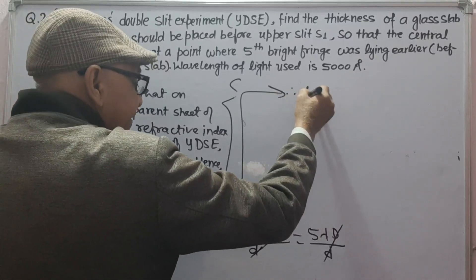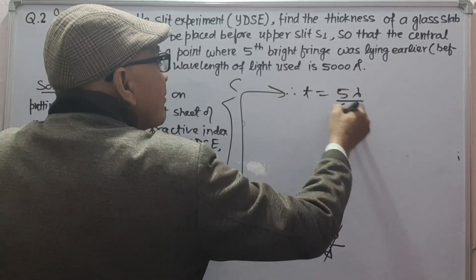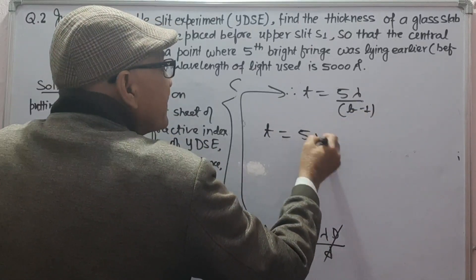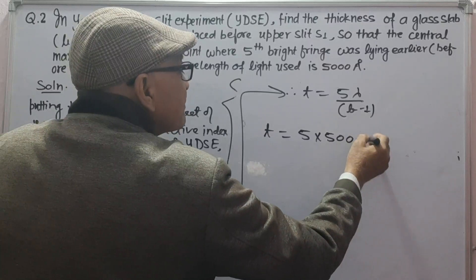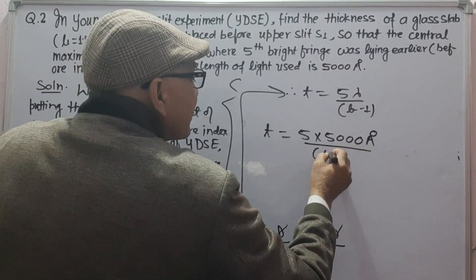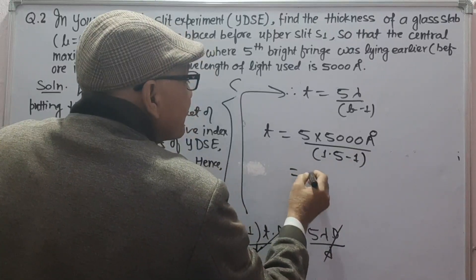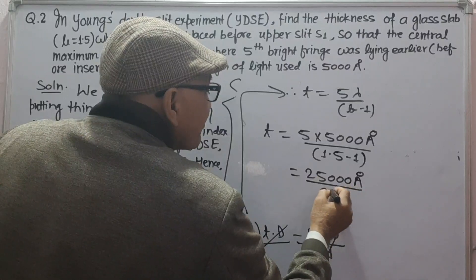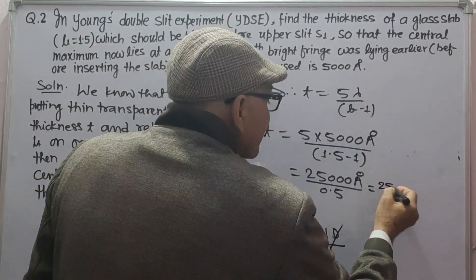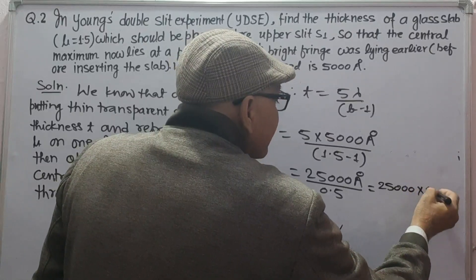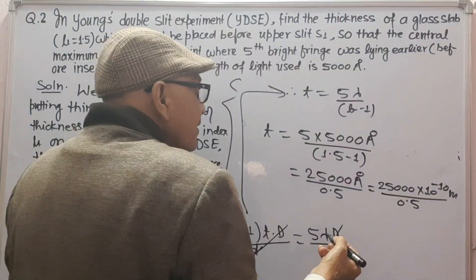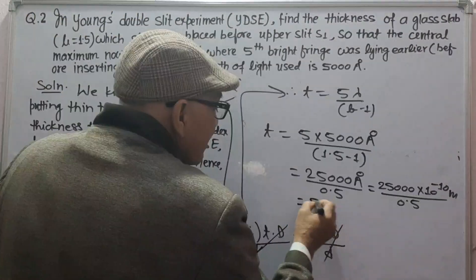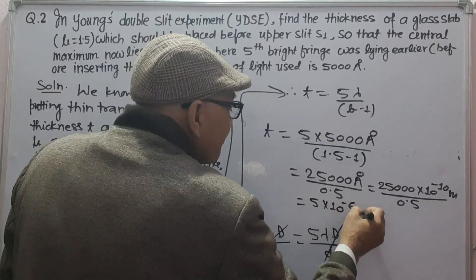Therefore, we get t = 5λ / (mu minus 1). So t = (5 × 5000 angstrom) / (1.5 minus 1) = 25,000 angstrom divided by 0.5 = 25,000 × 10⁻¹⁰ meters divided by 0.5, which gives 5 × 10⁻⁶ meters.